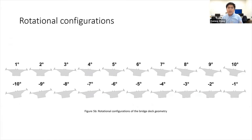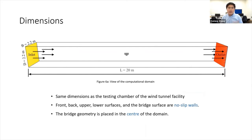Like the wind tunnel test, there are 21 configurations in the CFD simulations, each of which simulates the bridge deck with a different angle of attack ranging from minus 10 degrees to plus 10 degrees with an increment of 1 degree. The dimensions of the domain are the same as those of the wind tunnel testing chamber. The yellow face on the left is the inlet and the red face on the right is the outlet.